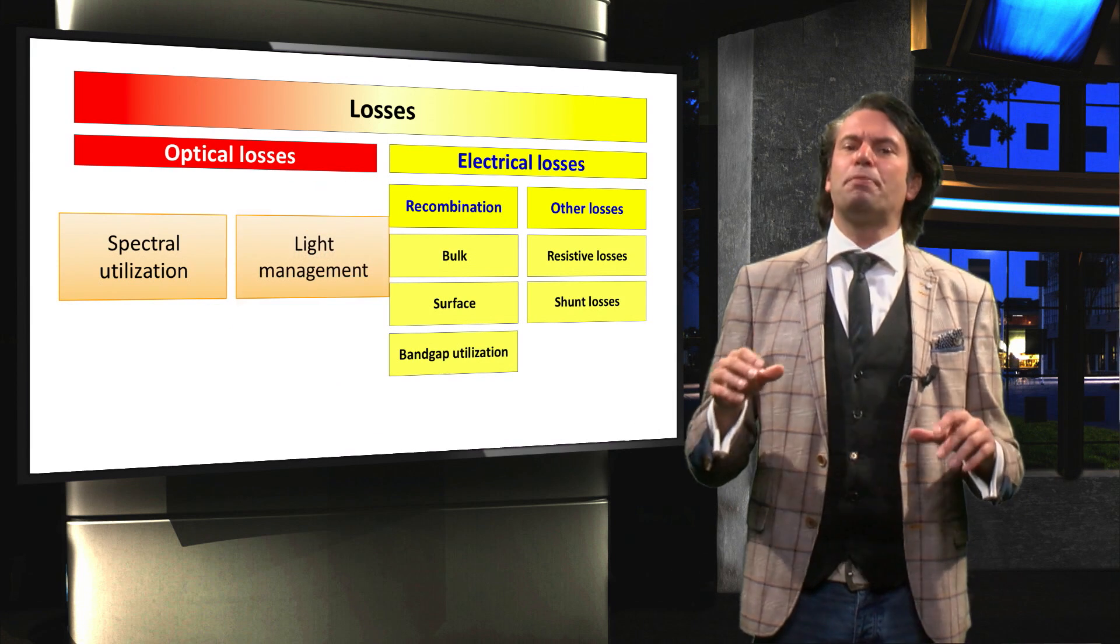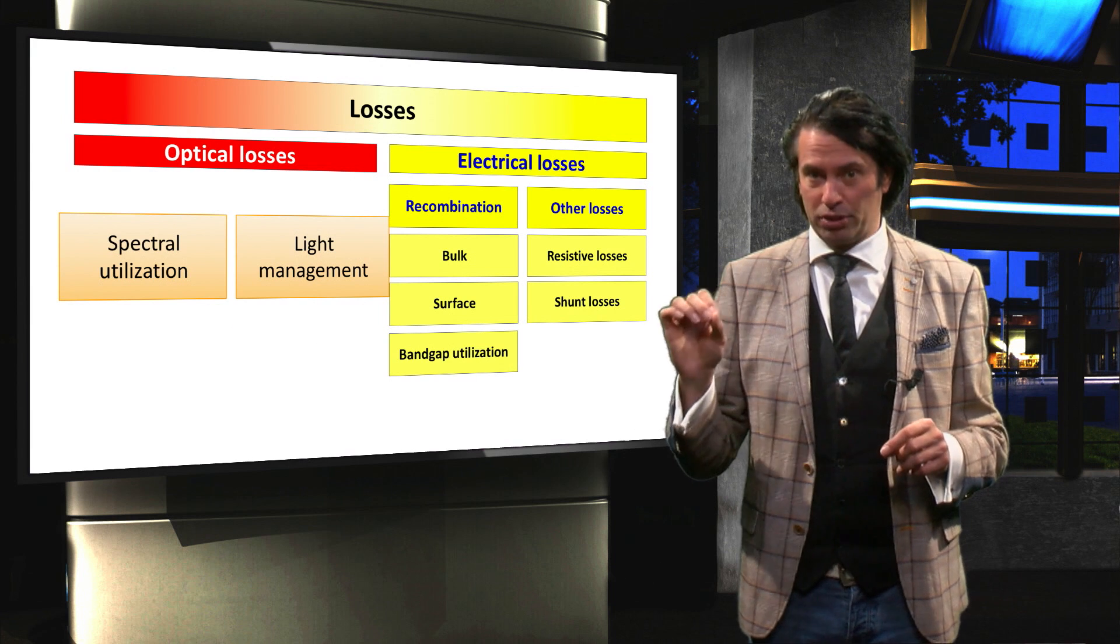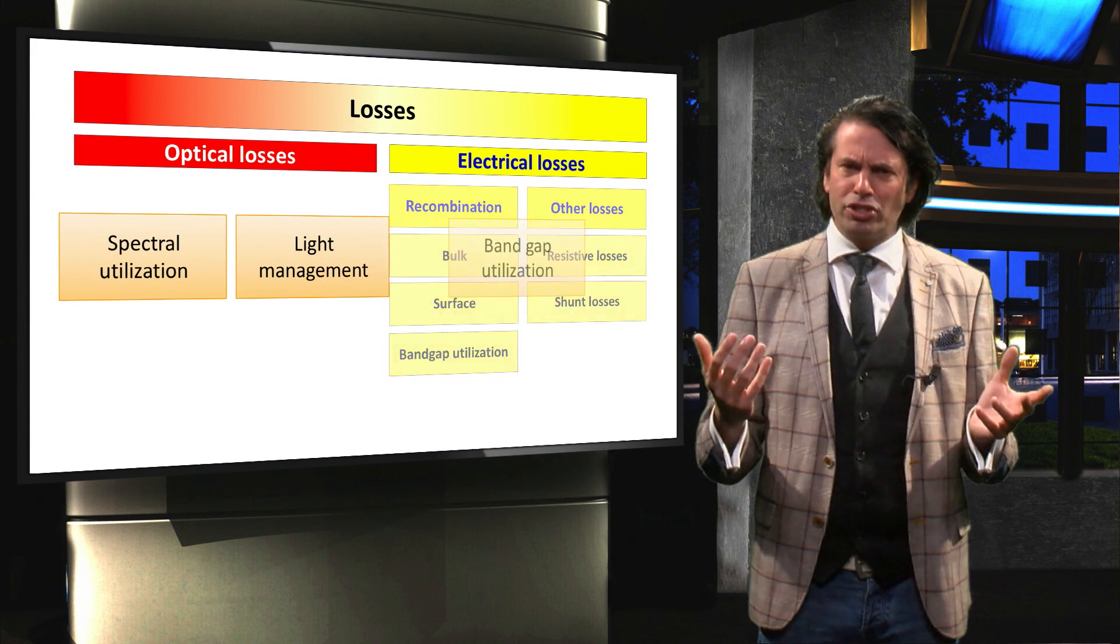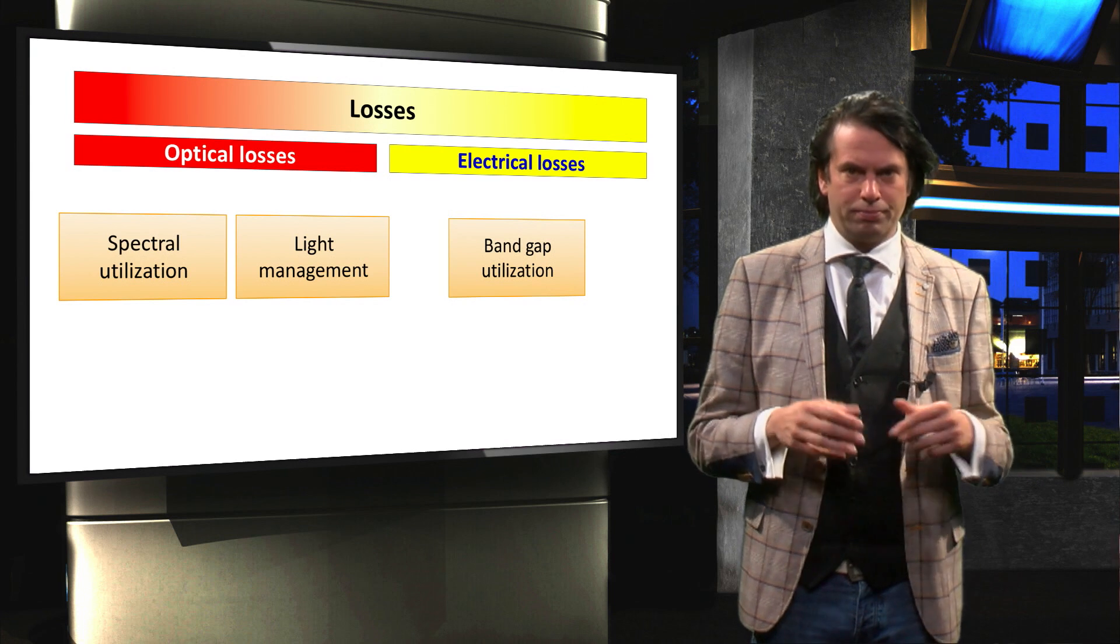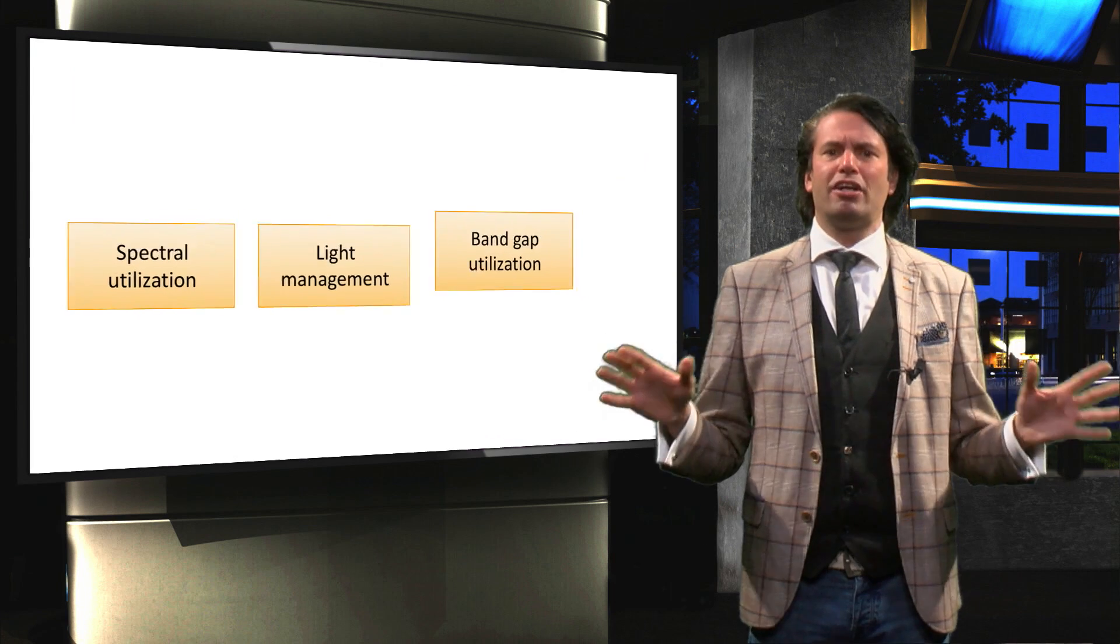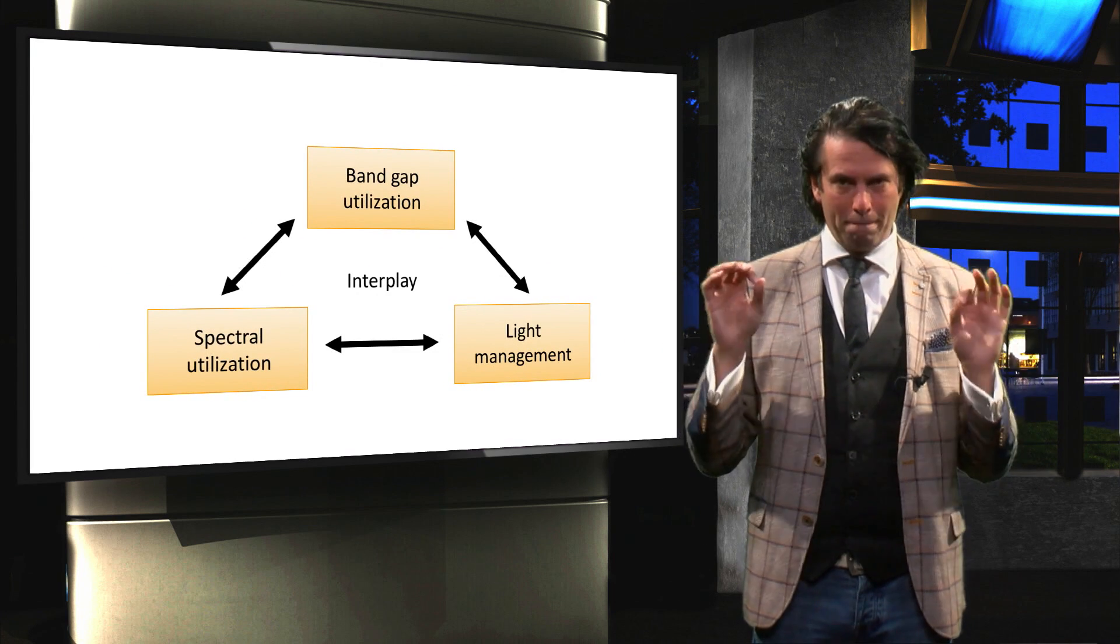The additional optical losses are the main concern of the design rule known as light management. The electrical losses are considered in the bandgap utilization design rules. Designing any type of a solar cell involves a delicate interplay between these three pillars.